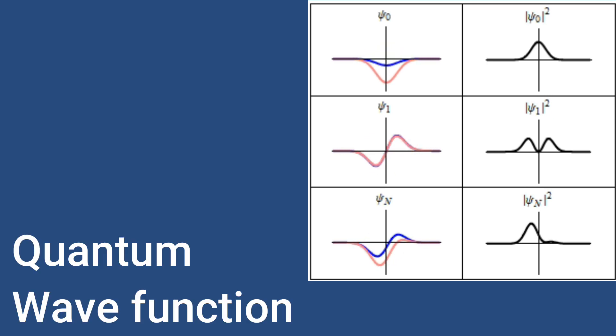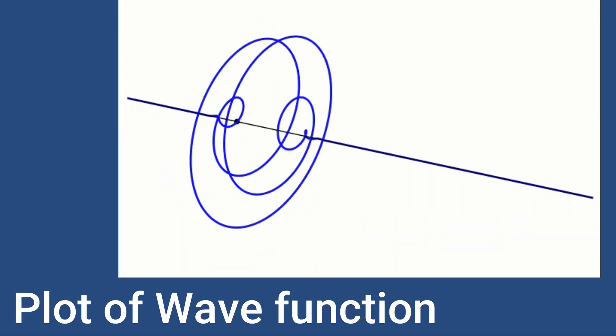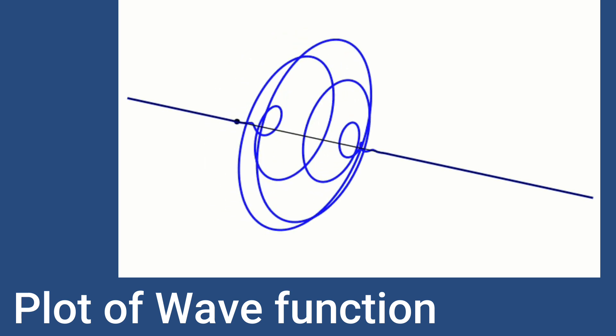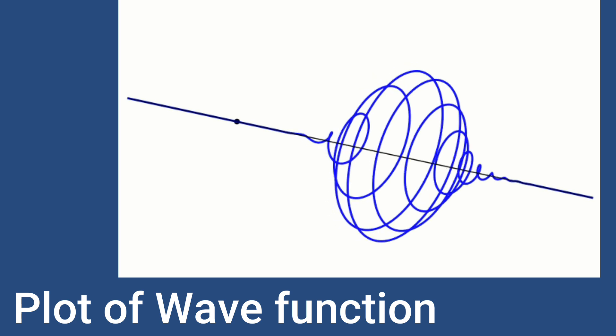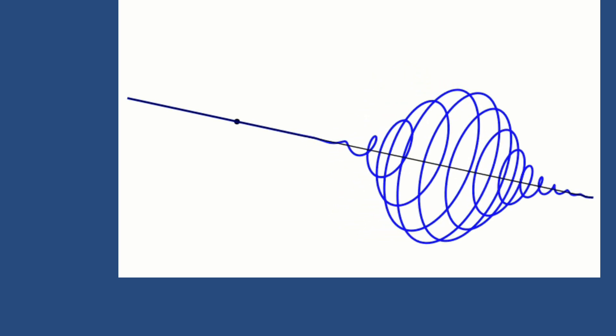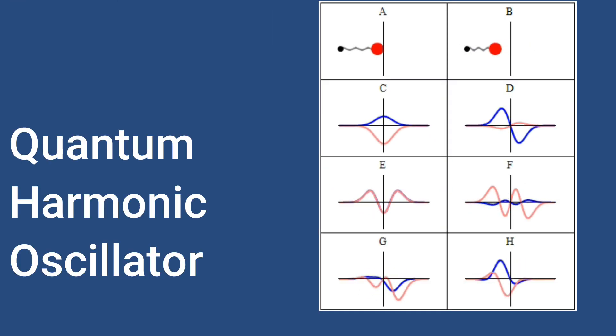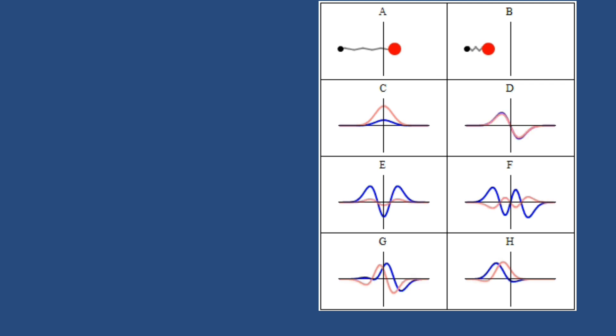In quantum mechanics, the evolution of the quantum state is described by the Schrödinger equation. We have one quantum state at the beginning and the final quantum state after applying the Schrödinger equation. This quantum evolution is described by the unitary transformation. That's the reason why unitary holds a great role in fundamental physics.